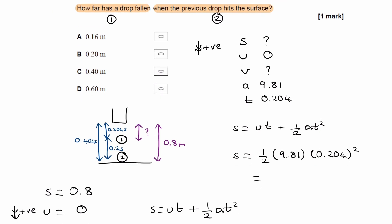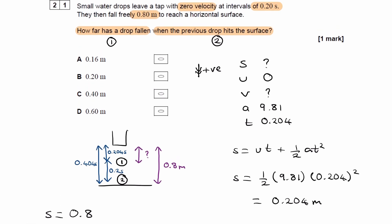And this gives us 0.204 meters. So that will be b. I will put that into my choice.